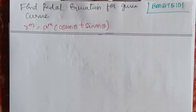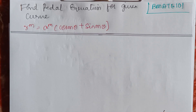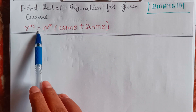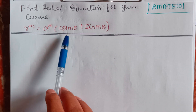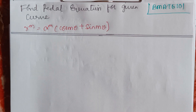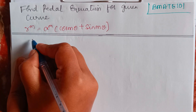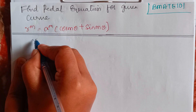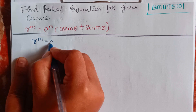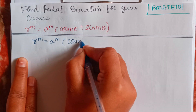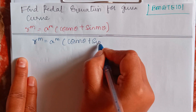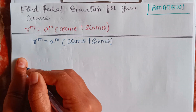Hello everyone, welcome back to my YouTube channel, Learn with Sumi. In this video, we are going to find the pedal equation for the given curve r to the power m equals a to the power m into cos mθ plus sin mθ. So I will rewrite the equation: r^m = a^m(cos mθ + sin mθ).